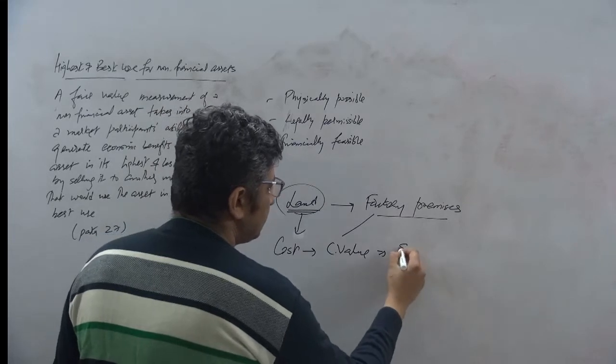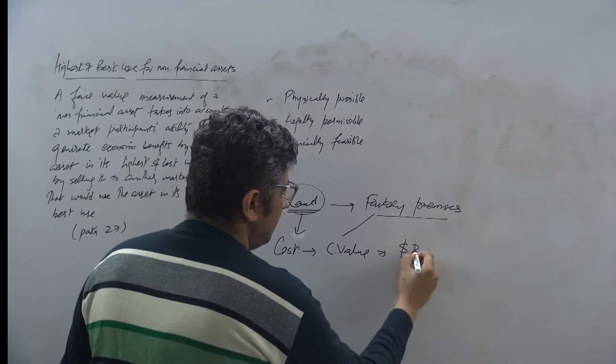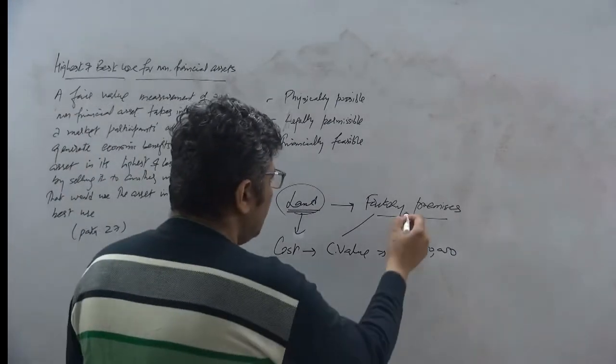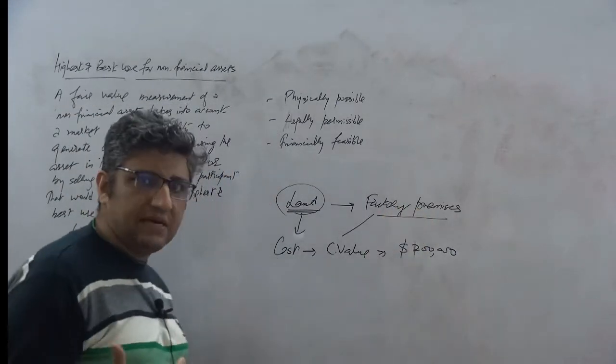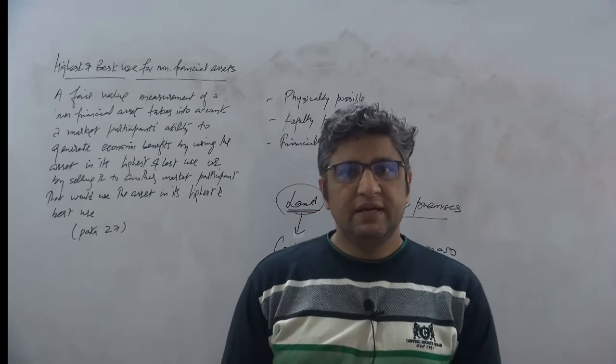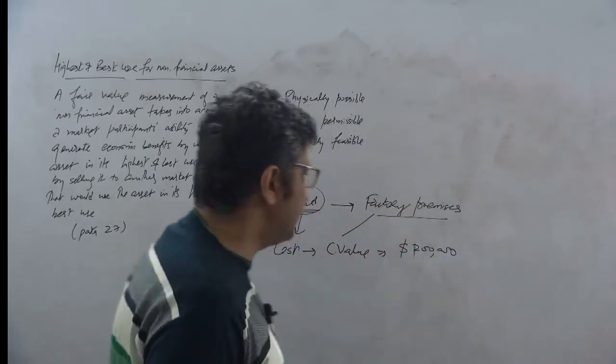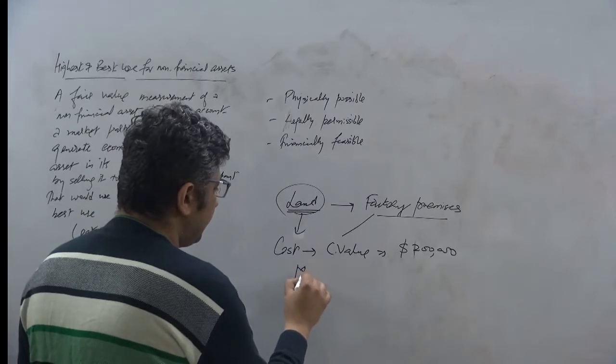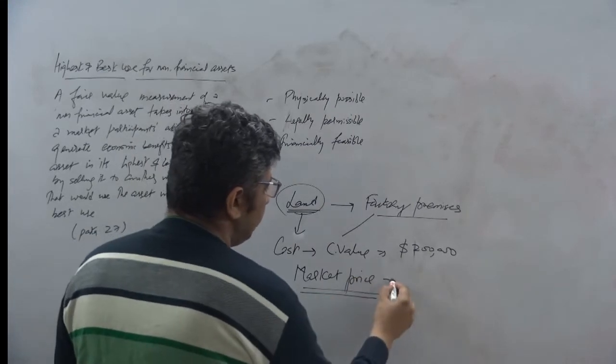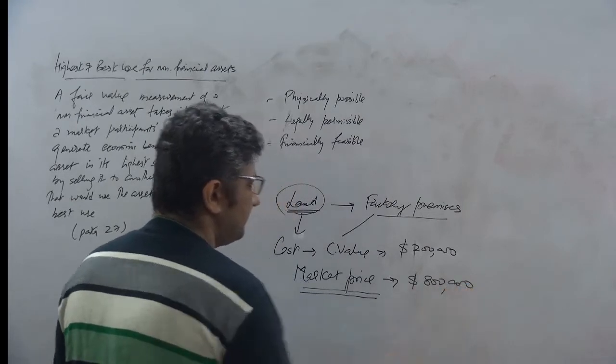Okay. Let us say this is, let us put a number around this, let us say $200,000, right. Now, I believe, since I am using this land as a part of my factory premises, I am saying that this land, if I use it as a factory, of course, with the factory itself, I can fetch a market price. Say, for example, $800,000, right.